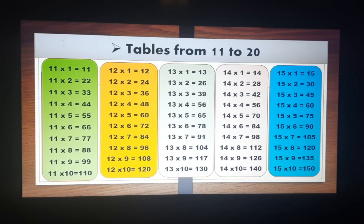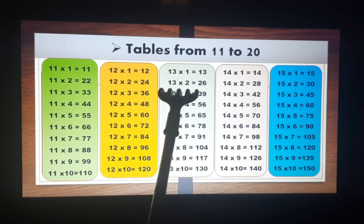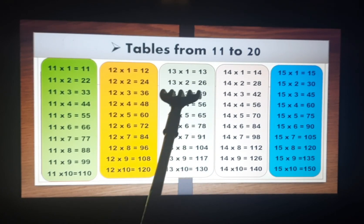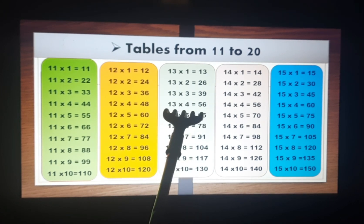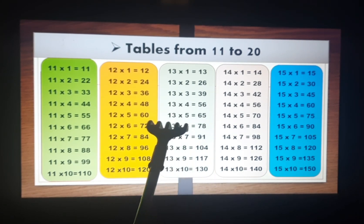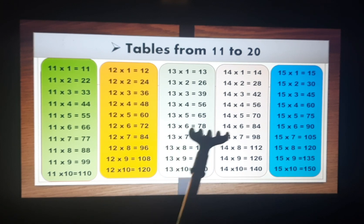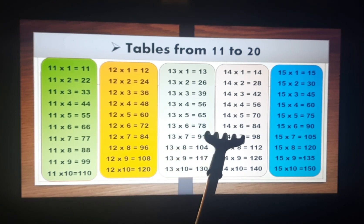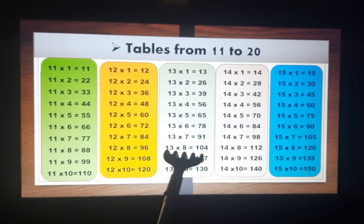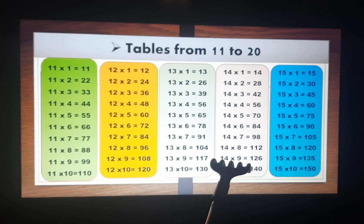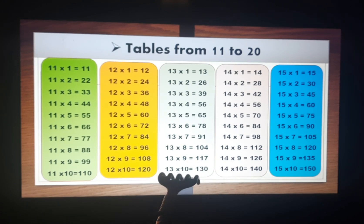In this way you can make your own tune and sing with me. Thirteen ones are thirteen, thirteen twos are twenty-six, thirteen threes are thirty-nine, thirteen fours are fifty-two, thirteen fives are sixty-five, thirteen sixes are seventy-eight, thirteen sevens are ninety-one, thirteen eights are one hundred four, thirteen nines are one hundred seventeen, and thirteen tens are one hundred thirty.